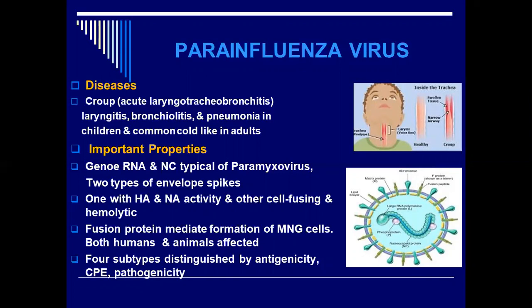Looking at the important properties of the parainfluenza virus, as already discussed, it shares characteristics with measles, mumps, and respiratory syncytial viruses. The genome is RNA, and the nucleocapsid is typical of the parainfluenza viruses. It is made of hemagglutinin, and of course we have the fusion protein also.